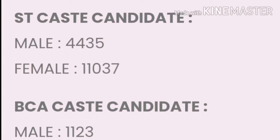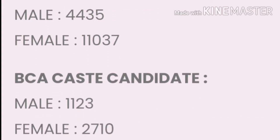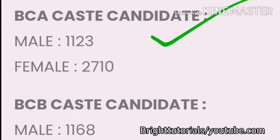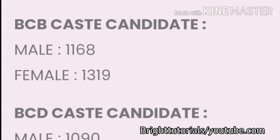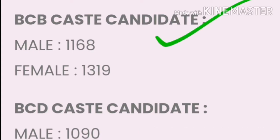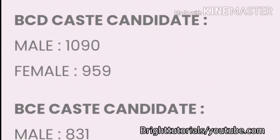For the ST caste in CSE: for male the cutoff is 4435 and for female the cutoff is 11037. For BCA caste: male cutoff is 1123 and female cutoff is 2710. For BCB caste: male cutoff is 11168 and female cutoff is 1319.